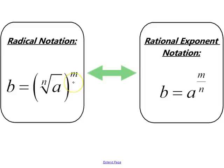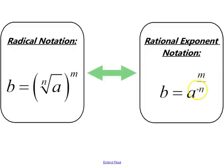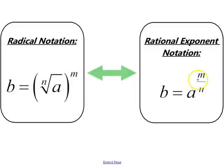If we were to convert that into rational exponent notation, you would take the radicand and raise it to an exponent written as a fraction. The index becomes the denominator of that fraction and the exponent raised on the outside becomes the numerator of that fraction.